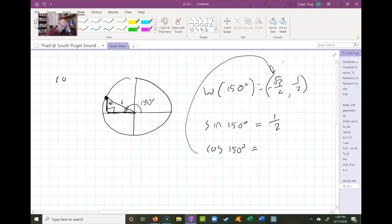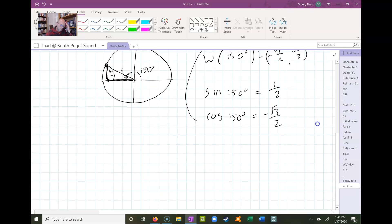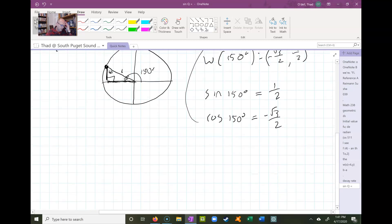Cosine of 150, for the same reason as sine was one half, we know that cosine would be that coordinate, so that would be negative √3 over 2. You already know that, we talked about that, and you definitely want to practice getting better at finding your way around the unit circle and be able to evaluate sine and cosine.